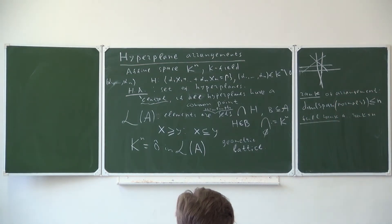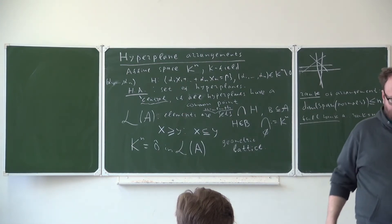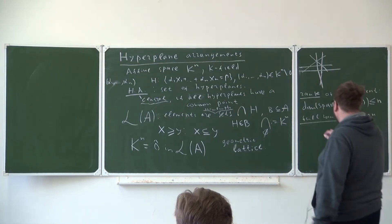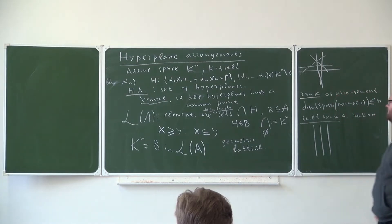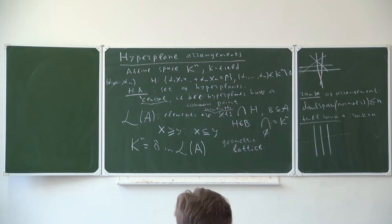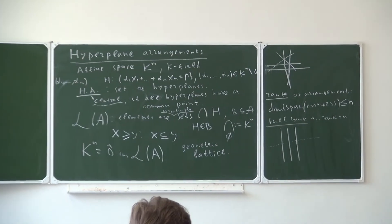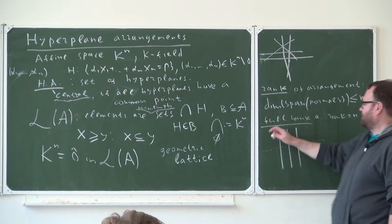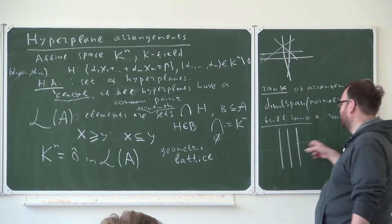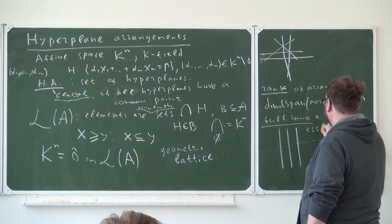If the rank is less than n, then essentially the arrangement lives in a smaller space. For example, if you have several parallel lines on the plane, you see that essentially this is a one-dimensional arrangement. You may take a line not parallel to them and consider what these hyperplanes form on that line. This is called the essentialization of the arrangement.